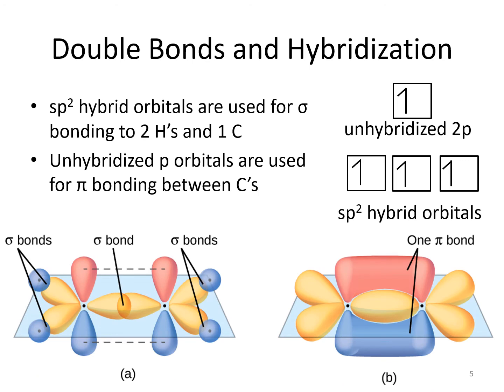The three sp2 hybrid orbitals are used for sigma bonding. Two are used for bonding to the hydrogens, overlapping with an s orbital on the hydrogen atom. The other sp2 hybrid orbital is used for bonding to the other carbon. That sigma bond is made from the sp2 hybrid orbital from one carbon overlapping with an sp2 hybrid orbital from the other carbon. They are sigma bonds because they are along the internuclear axis.